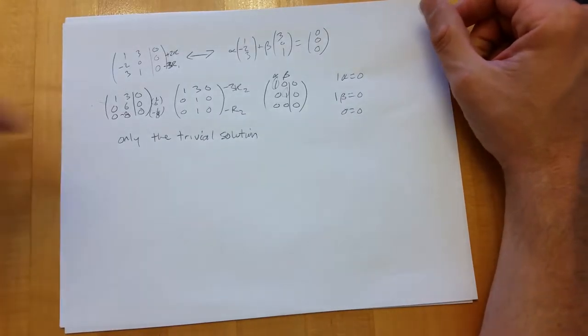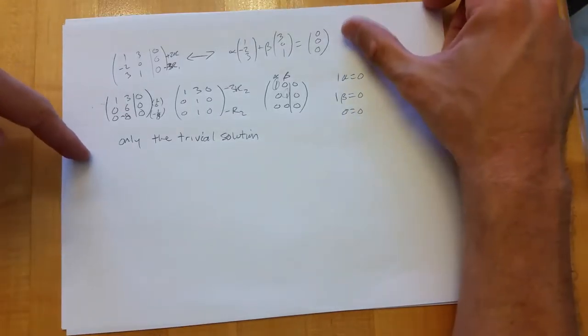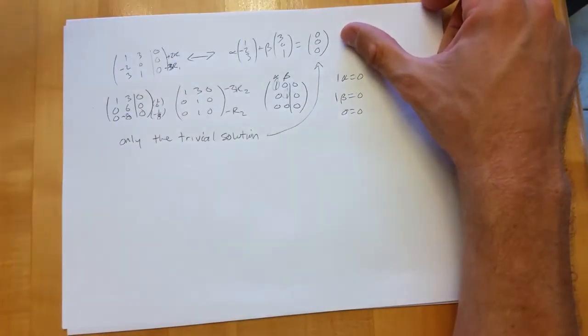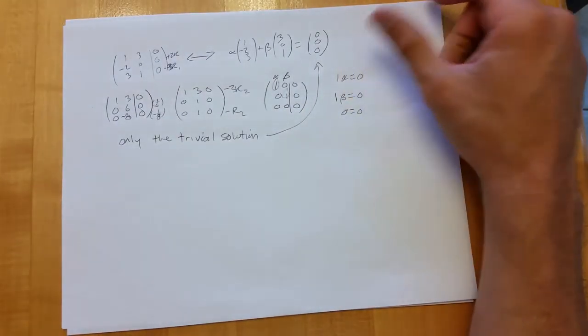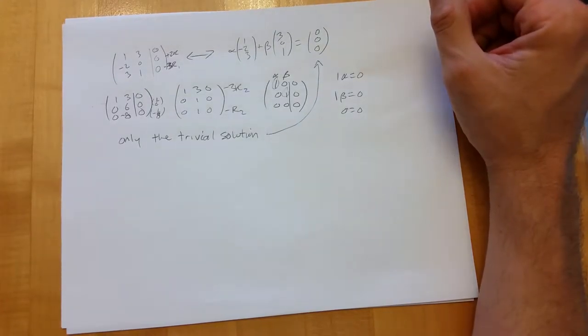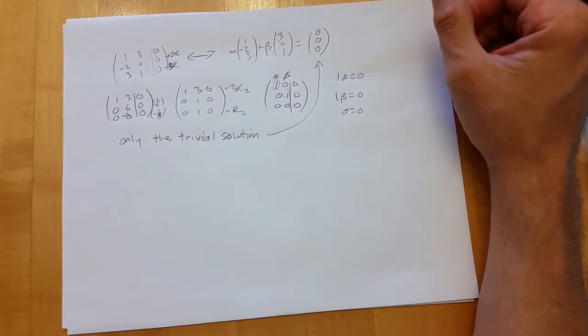So this equation has only the trivial solution, which means the vectors are linearly independent.